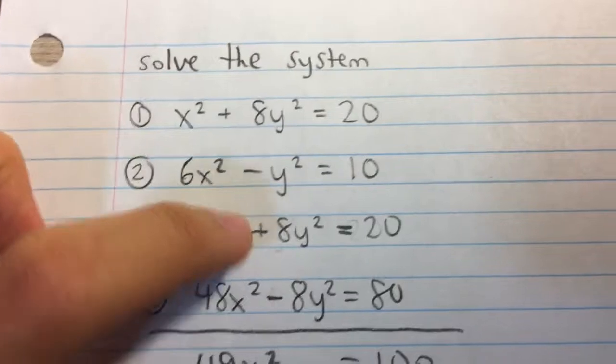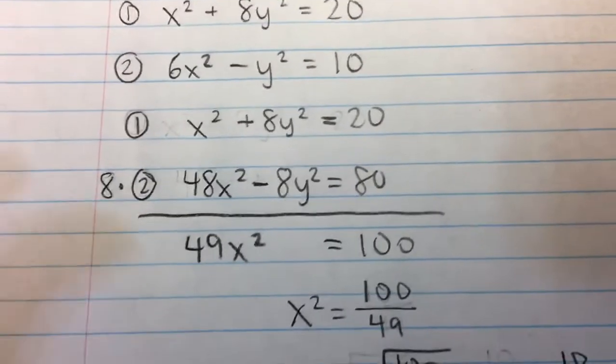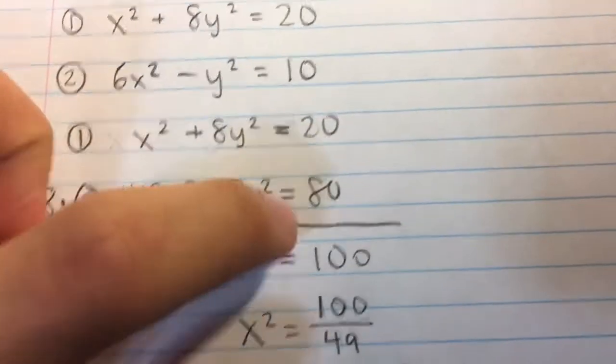Now when I add these two equations, the 8y² and the negative 8y² will cancel out, eliminate the y variable. And if I add this part, I'll get 49x². Here I get 100.